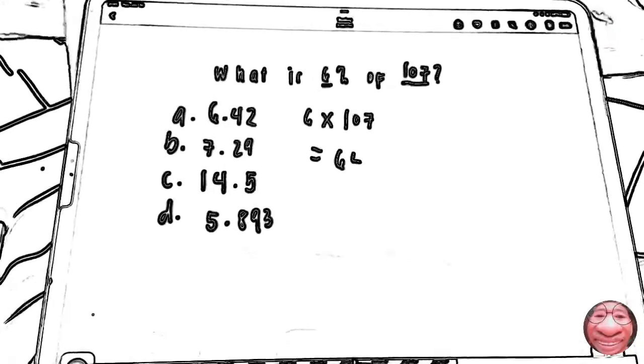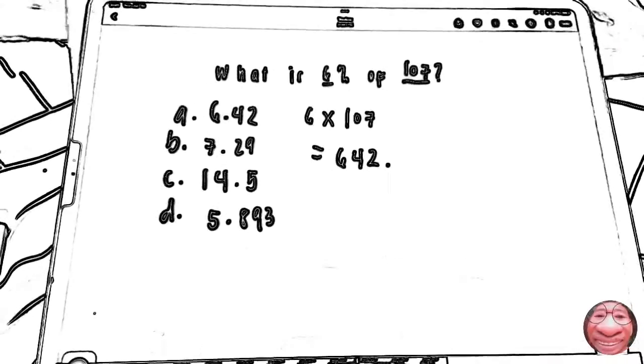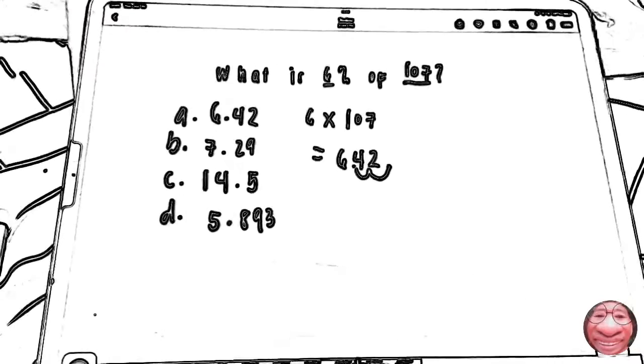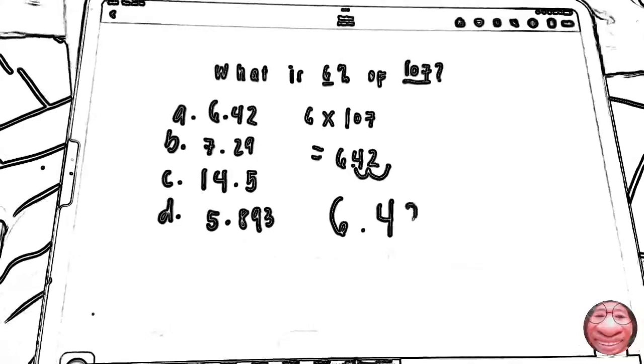Just do the same procedure and as you get your answer, 642, move the decimals into two places. Now you get 6.42.